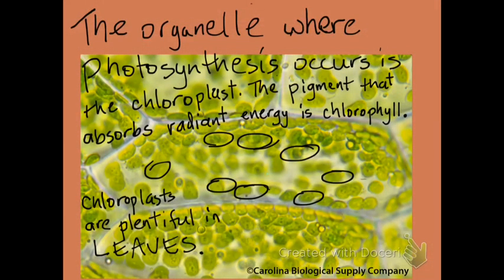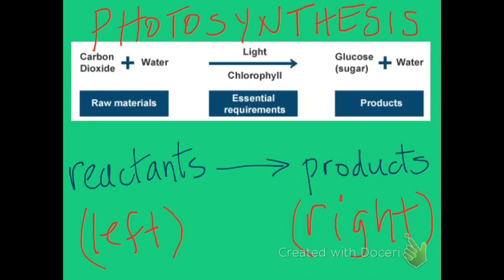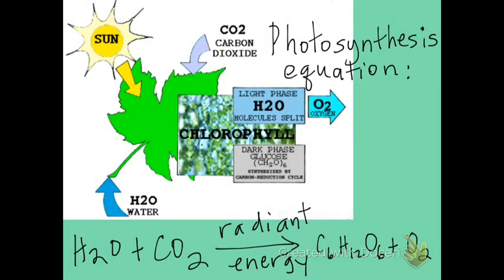The organelle where photosynthesis occurs is the chloroplast. The pigment that absorbs radiant energy is chlorophyll. Chloroplasts are plentiful in leaves. In the chemical equation for photosynthesis, the raw materials or reactants are on the left and the products are on the right. The reactants are six molecules of water plus six molecules of carbon dioxide, and the products are glucose and six molecules of oxygen.